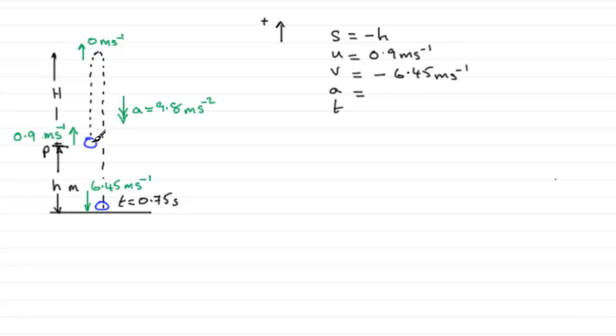The acceleration due to gravity, whether it's going up or down, the acceleration always acts down. So that is in the opposite sense to this. So that's going to be minus 9.8 meters per second per second. And the time we know is 0.75. It's a scalar quantity, so no direction involved.